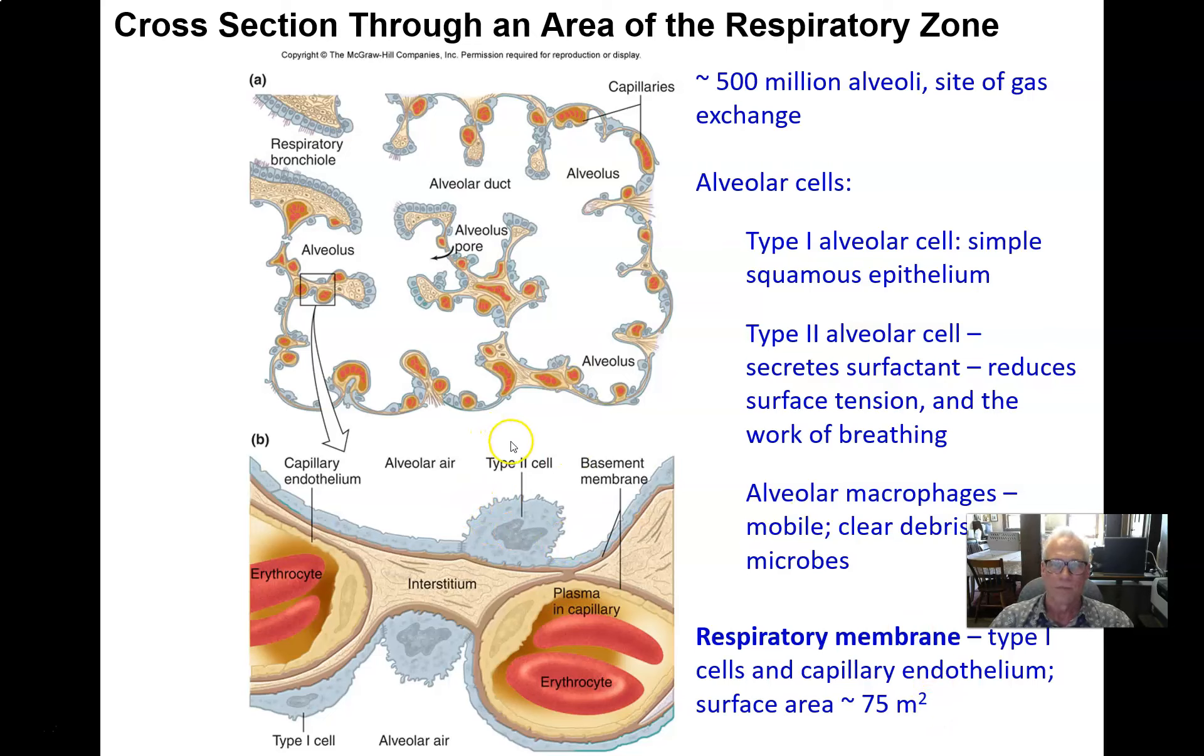There's some type 2 alveolar cells that are surfactant-secreting cells. At the end of this section, we'll mention briefly what surfactant is about. Surfactant is a detergent-like substance in the water on the surface of this epithelium that helps make it easier to expand the alveoli. We need that surfactant to be there to be able to breathe correctly.